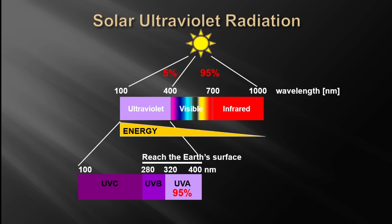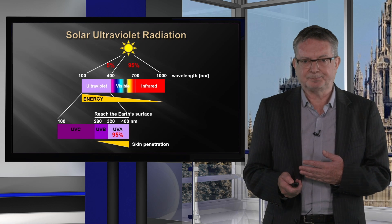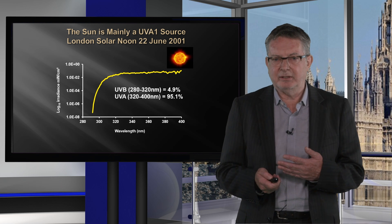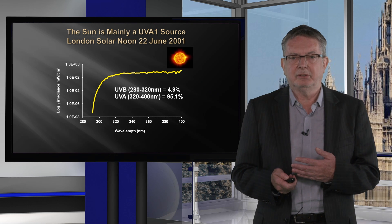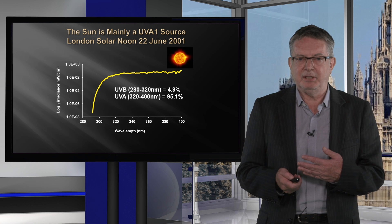We don't need to worry about UVC because it's taken out by the ozone layer. We do concern ourselves with UVB and UVA. Importantly, the sun is mostly a UVA source — typically about 5% UVB and 95% UVA. UVA also penetrates deeper into the skin, as demonstrated by a spectrum of sunlight measured outside St Thomas's Hospital.